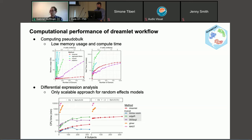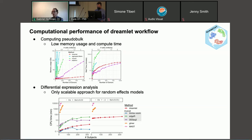Dreamlet, shown in red, scales across a thousand donors and two million cells. For computing the pseudobulk — a very time-consuming step — it has by far the lowest memory footprint and very competitive run times, and can be run on a laptop. For differential expression analyses, it is the only scalable approach that can include random effects. Even modeling batch as a random effect, it is orders of magnitude faster than GLM-ER or the MAST software.